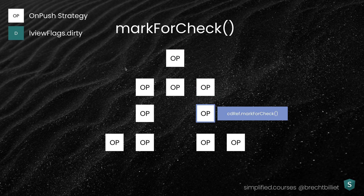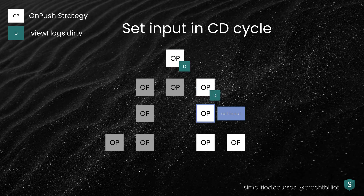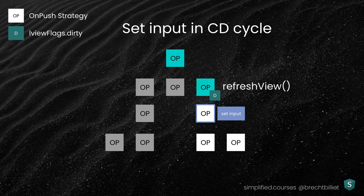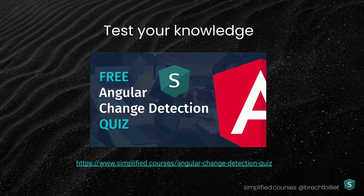The same is true if you're calling the markForCheck method from the ChangeDetectorRef — it marks the view and its parents as dirty, and then when Change Detection is triggered it traverses the tree just like we saw before. Have you ever wondered why immutable data is so important when using the onPush strategy? When an input is set with a new reference, this view is marked as dirty as well, so refresh view is called and the cycle is complete.